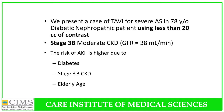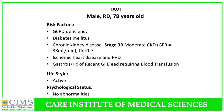We present a case of TAVI for severe aortic stenosis in a 78-year-old diabetic nephropathic patient where we used less than 20 cc of contrast. The patient had stage 3b moderate CKD with a GFR of 38 ml/min, was diabetic, elderly, and the risk of further acute kidney injury was always very high. Other risk factors included G6PD deficiency, diabetes, chronic kidney disease stage 3b with GFR of 38 ml/min, and creatinine of 1.7.